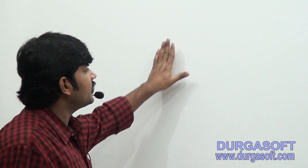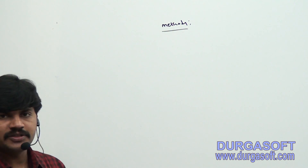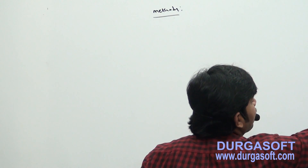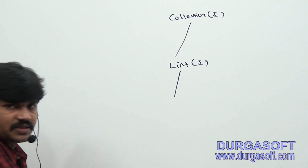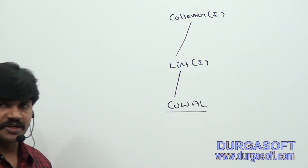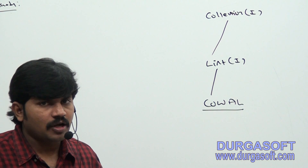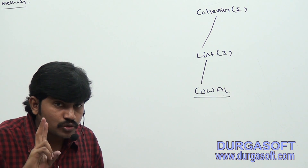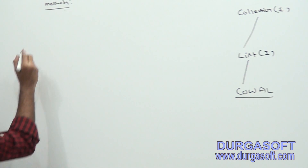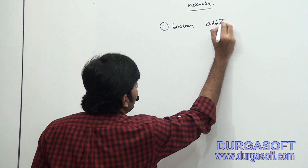Now we have to discuss methods related to CopyOnWriteArrayList. We covered constructors; next, what are the various methods? Collection is the parent, List is the child, and ArrayList and CopyOnWriteArrayList are implementation classes. All methods from Collection and List can be applied, but there are two new methods specific to CopyOnWriteArrayList. The first method: boolean addIfAbsent(Object o).